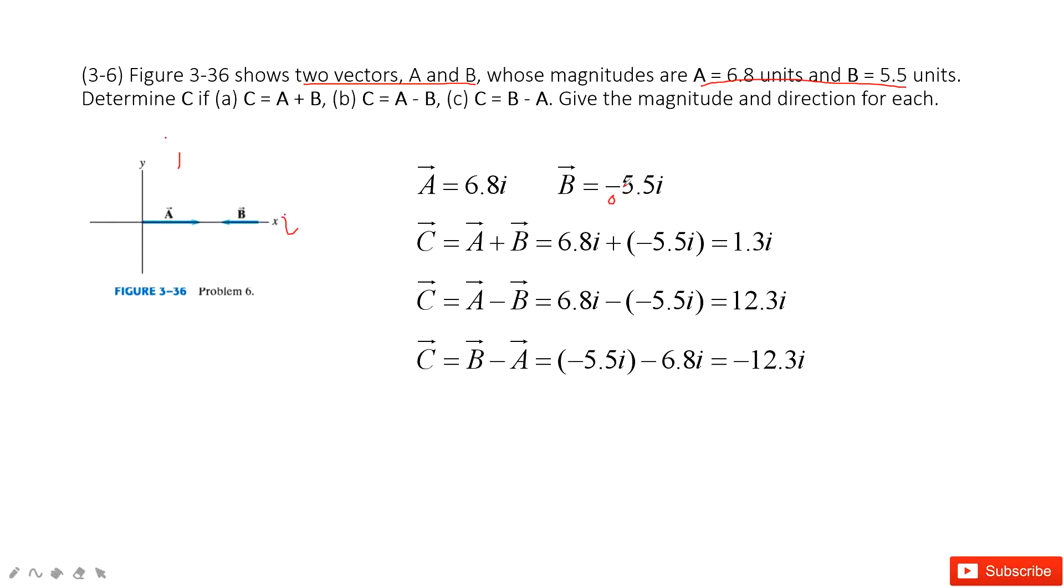For B minus A, both are negative, so we get the final result of -12.3i. Thank you.